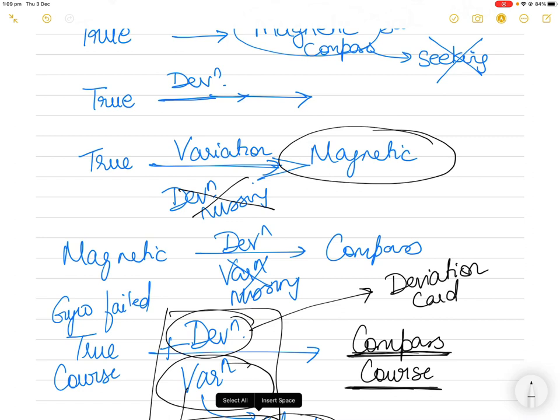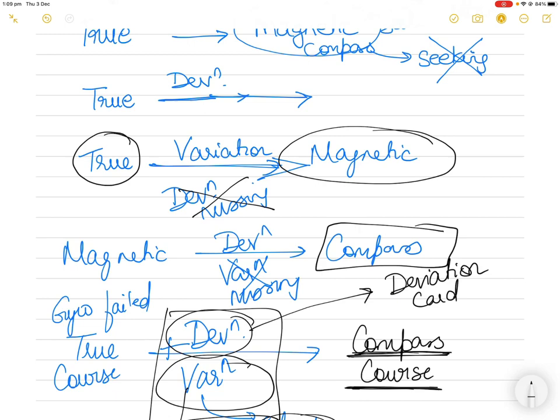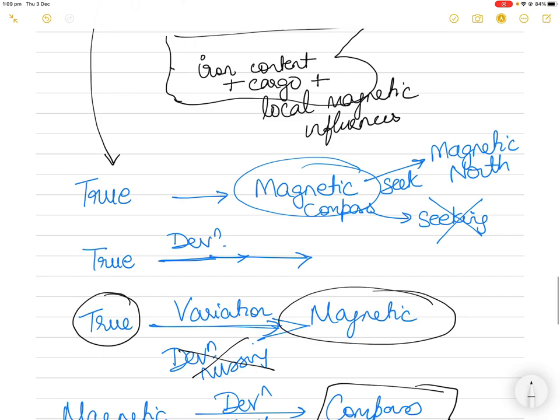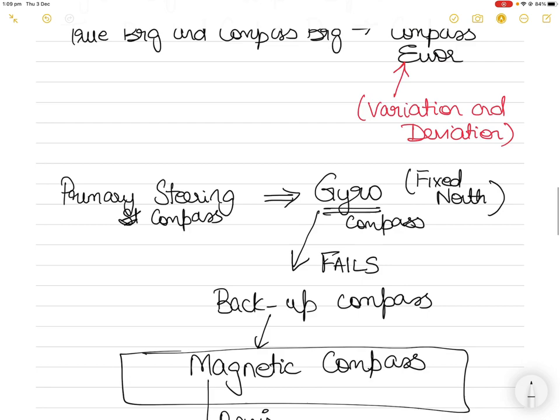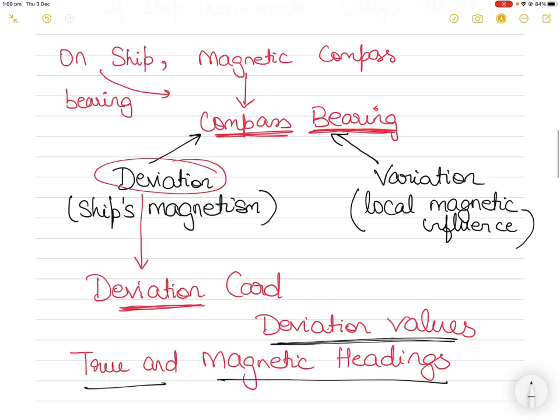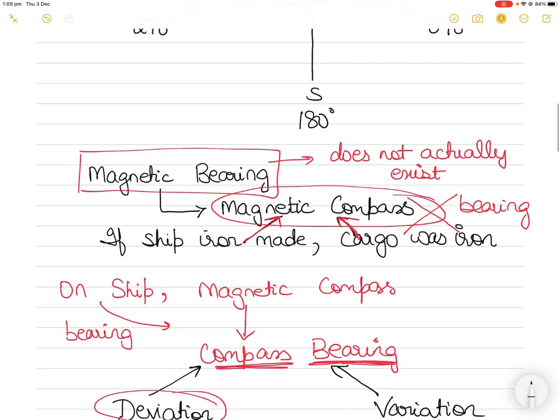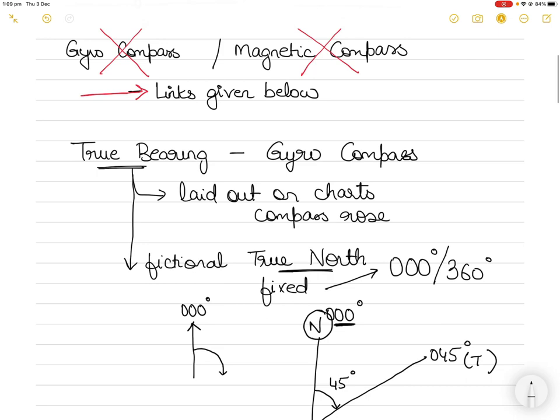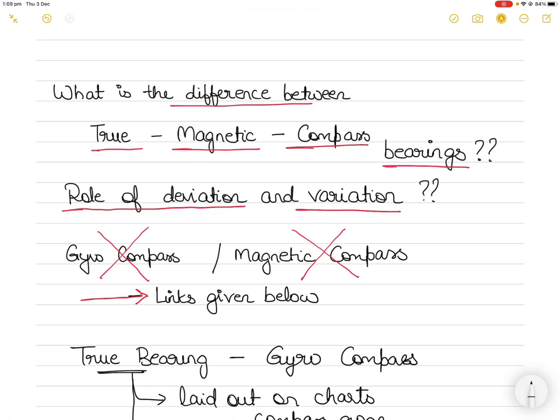When converting from true to magnetic compass course, because we have ship's magnetism, we also have to apply deviation, which makes it a compass course. If the ship were made of wood, we would only apply variation and steer the magnetic course, but because ships are made of iron we apply both. I hope this clears the confusion. Please watch my other videos on gyro compass, magnetic compass, deviation, and variation calculations. Let me know if you still have any doubts. Thank you for watching and good luck with your studies.